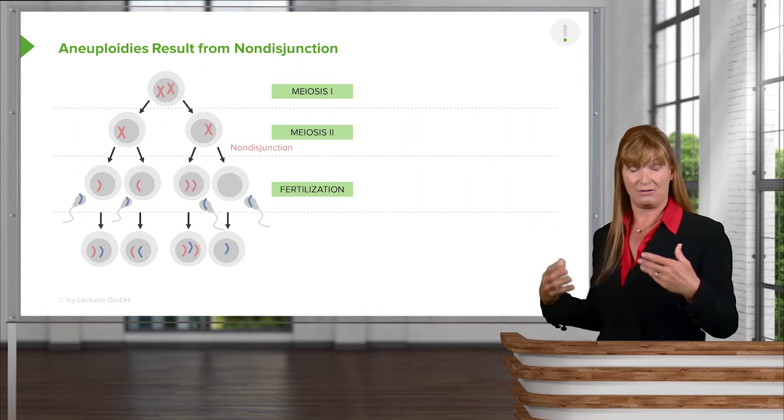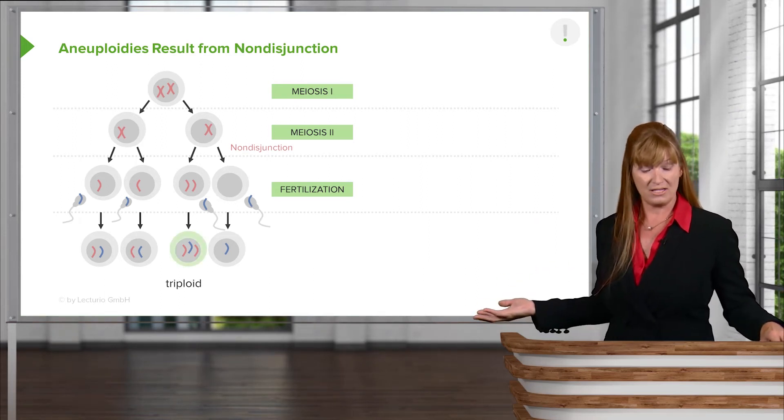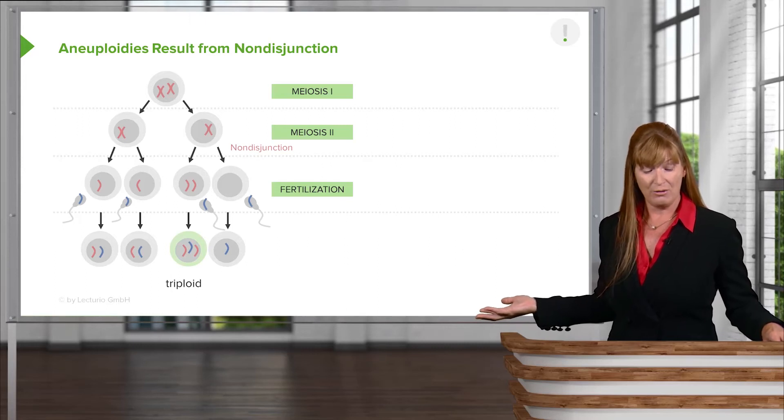Now, let's imagine we're just dealing with chromosome 21 here. We might have a triploid, or trisomy 21, or a monosomy.